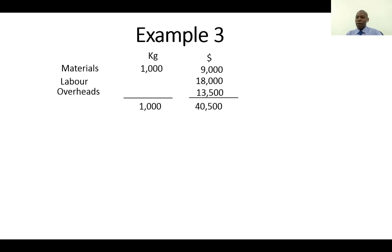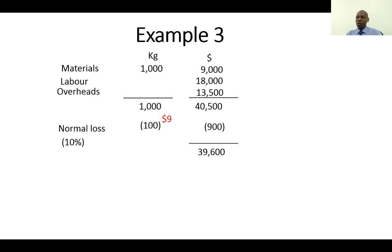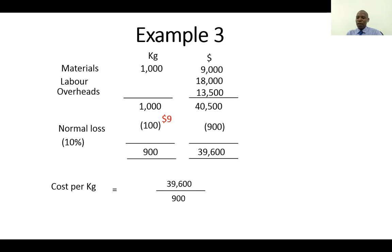Now we have our normal loss. We're expecting to lose 10%, so instead of dividing $40,500 by 1,000, we first deduct the normal loss. The normal loss is 10%, which is 100 kgs, valued at $9 per kg — these are sold at scrap value — giving a total value of $900. When we subtract $900 from $40,500, we remain with a net cost of $39,600 and net units of 900. The cost per kg is $39,600 divided by 900, which gives us $44.